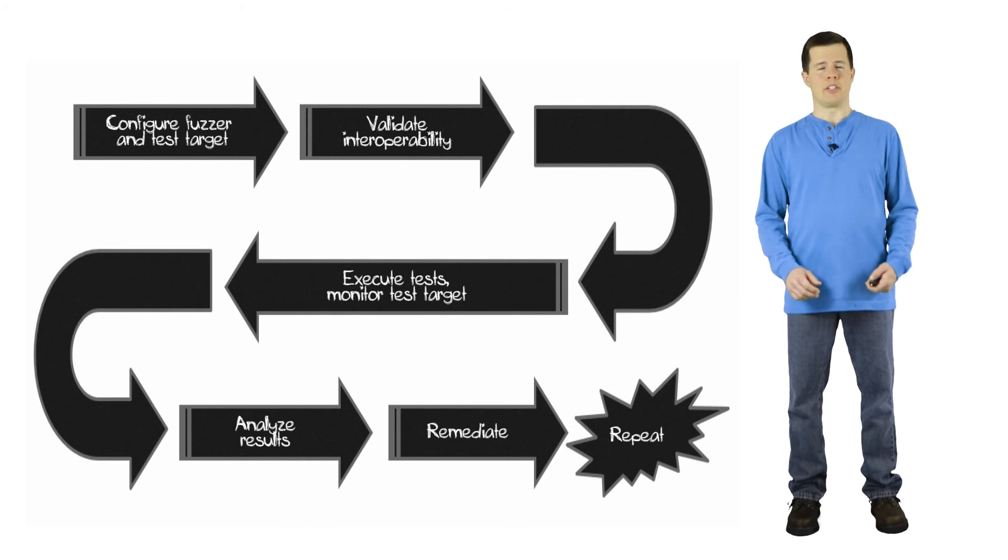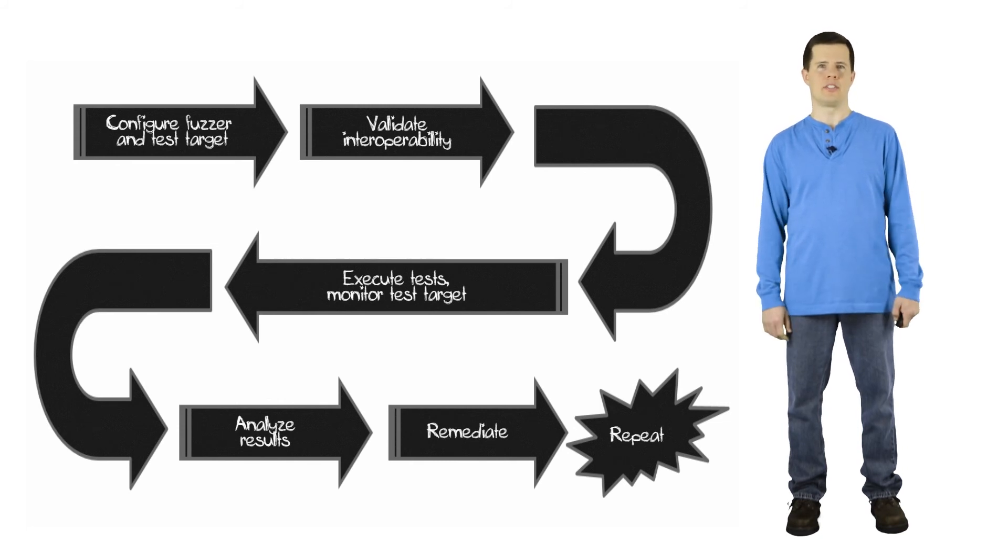So you have the fuzzer deliver all the test cases to the target. While you're delivering test cases, the fuzzer is monitoring the target to see if it's still healthy or if some kind of failure has occurred. And then when you're all done, you look at the results.